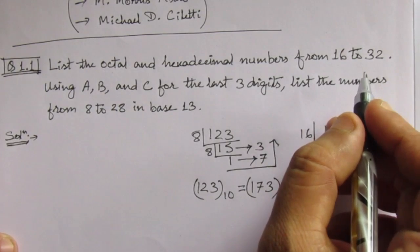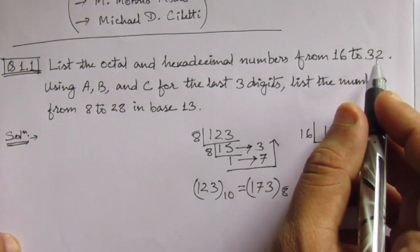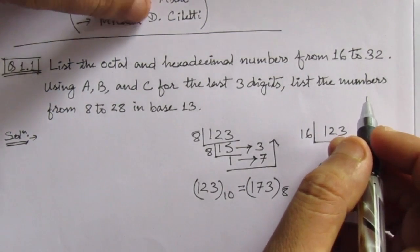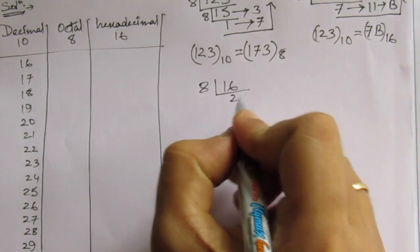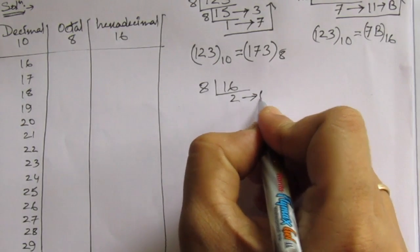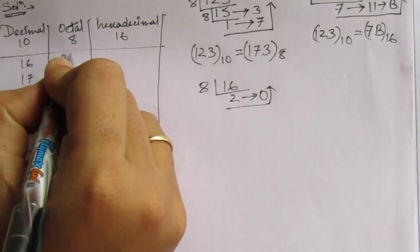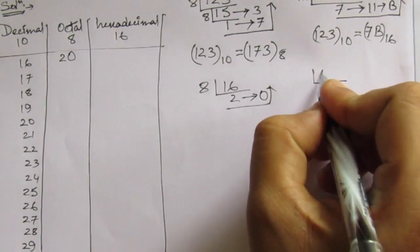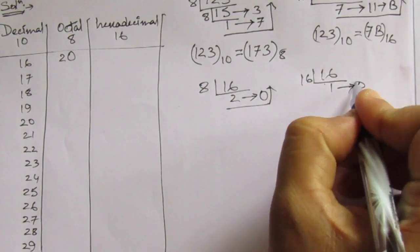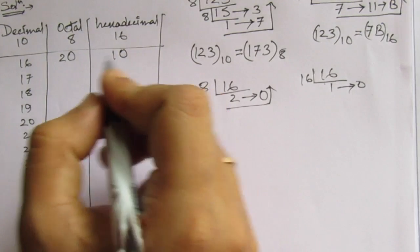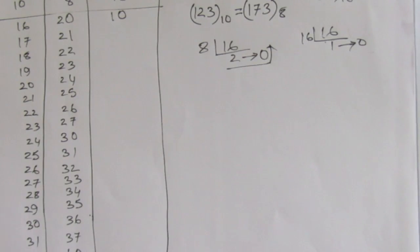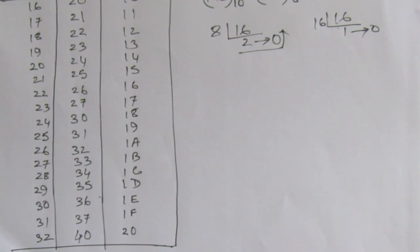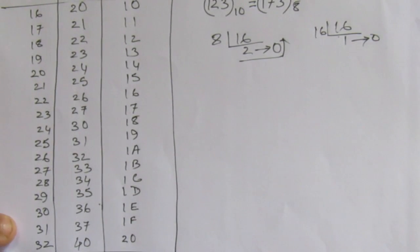Now, let us make the list from 16 to 32. We have to find out the representation of these numbers. Let us first make a table from 16 to 32. For 16, we divide by 8: we get 2 with remainder 0, so it is 20 in octal. For hexadecimal, 16 divided by 16 gives 1 with remainder 0, so it is 10 in hexadecimal. We have converted all decimal numbers from 16 to 32 into their respective octal and hexadecimal numbers.